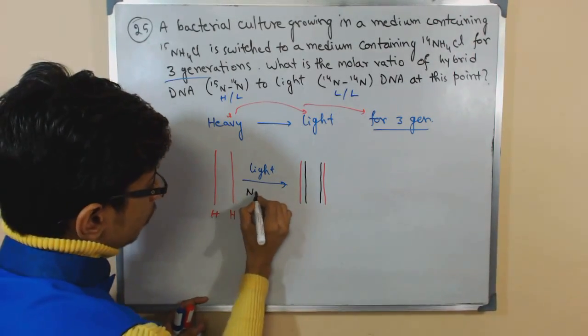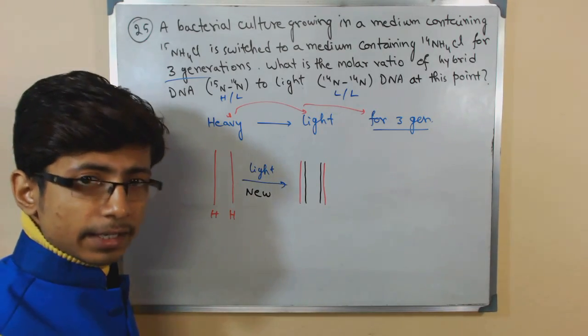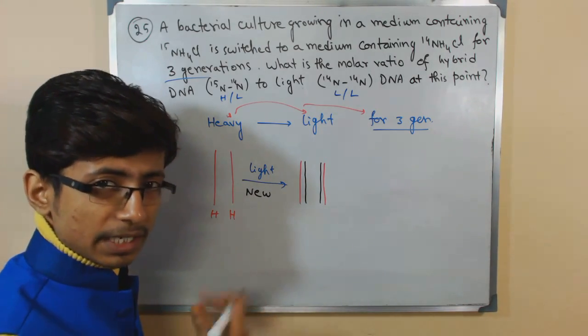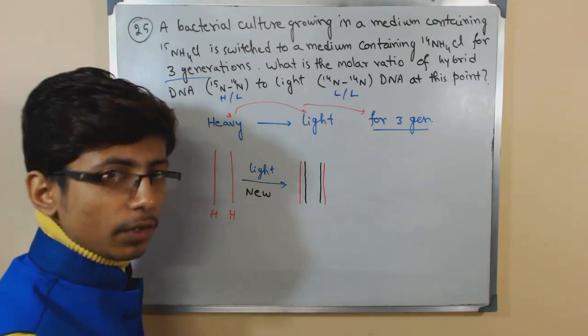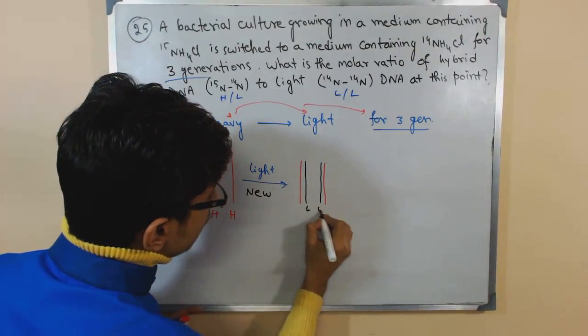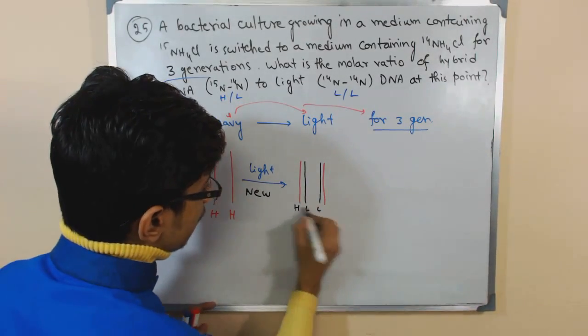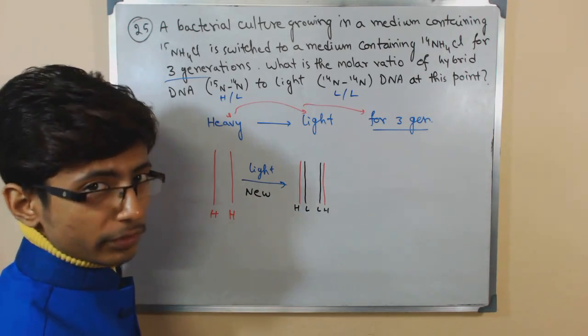New strand will be light. Remember, new strand will be light because we have transferred that into the light medium containing light nitrogen. So whatever bases will be added afterwards will be containing light nitrogen. So these are the light and these are the heavy. So we produce this hybrid in the very first generation.